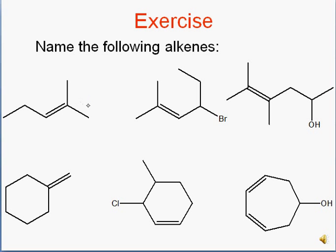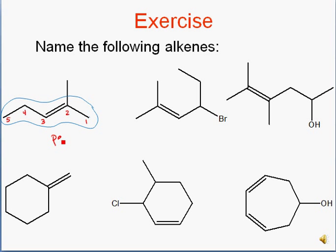We start by finding our longest chain. Counting 1, 2, 3, 4, 5 — that's our longest chain, so I'm going to circle it. Then we need to number our chain. It's easy when you have an alkene because you start at the end closest to the alkene. Numbering right to left gives me a 5-carbon chain, which is 'pent'. The ending for alkenes is 'ene', so pentene.